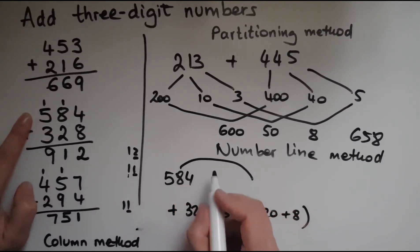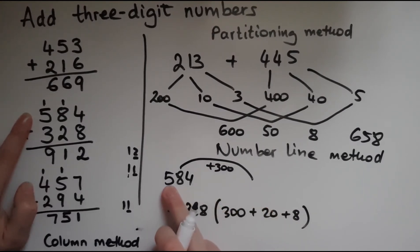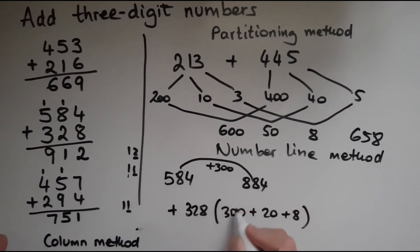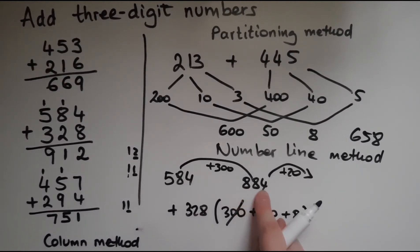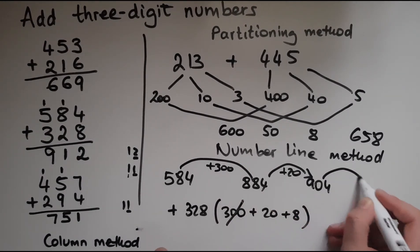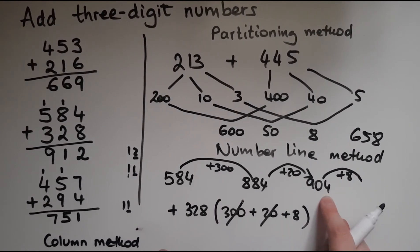If I add 300 to it, it will become 684, 784, 884. So I've done the 300. Then I'm going to add 20 to it. So 884, 894. And if I add another 10, that will become 904. Now all that remains is adding 8. So I'll add 8 to that. If I add 8 to 4, that becomes 12. And that was 904. So this is 912 as the answer.